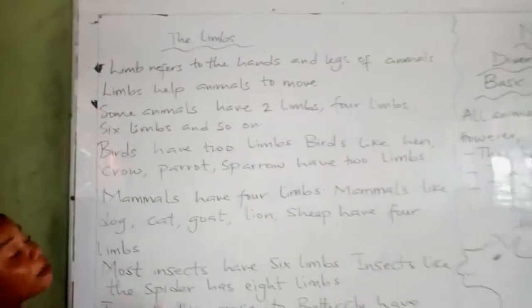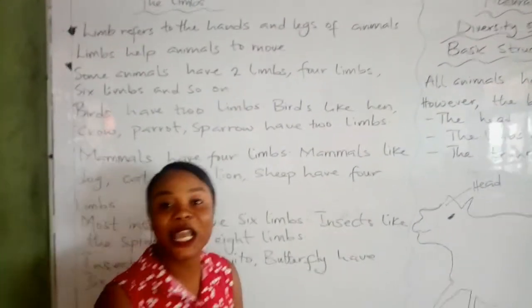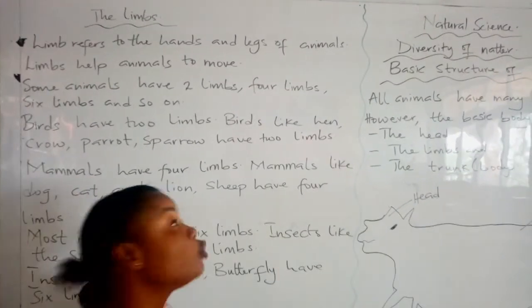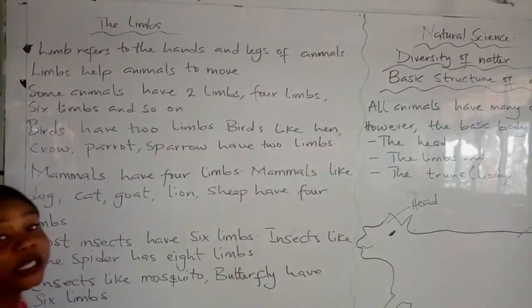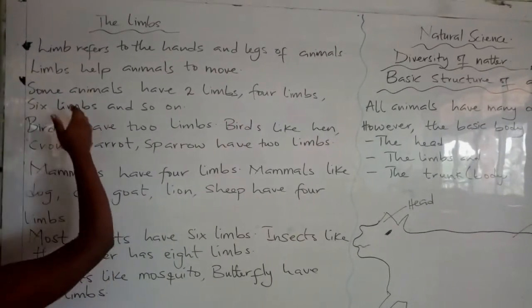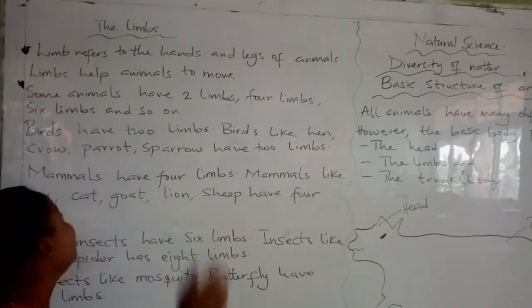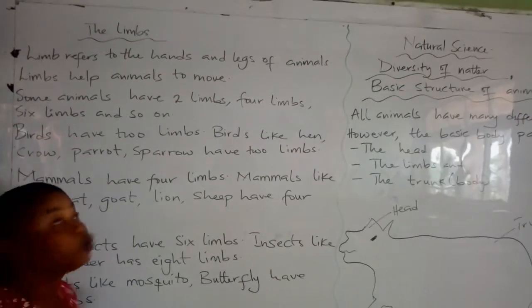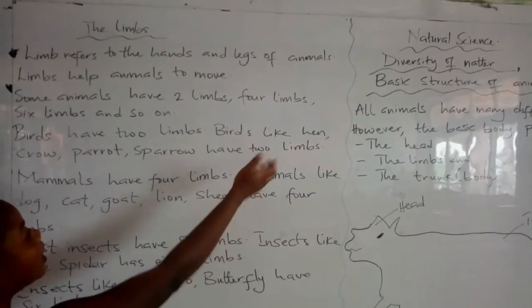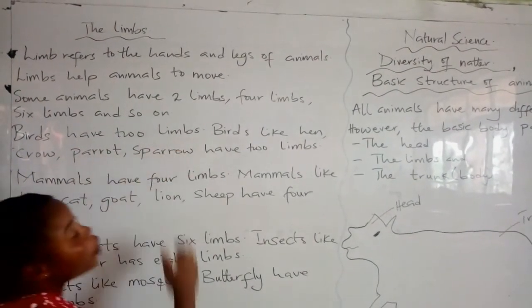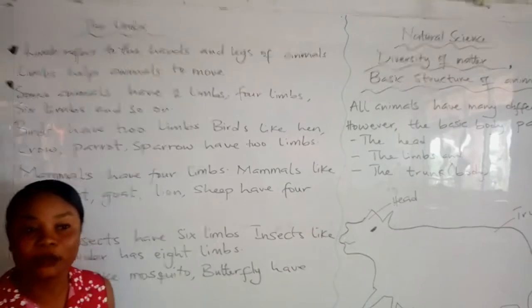The limbs of animals are very important. Without their legs and their hands, they would not be able to move from one place to another. Some animals have two limbs, others have four limbs, others also have six limbs and so on. Birds have two limbs — examples are crow, parrot, and sparrow. They all have two limbs.